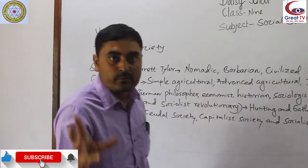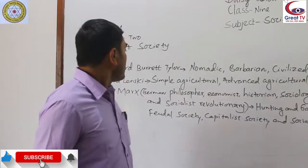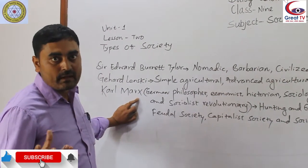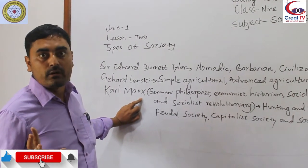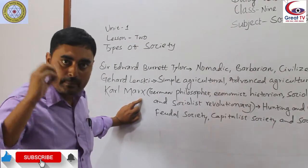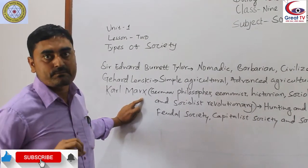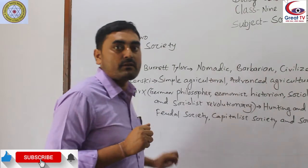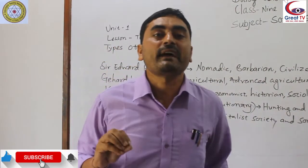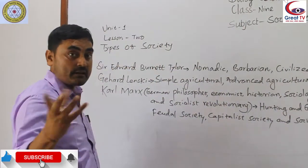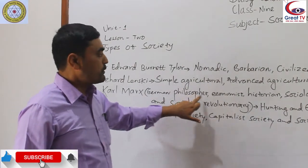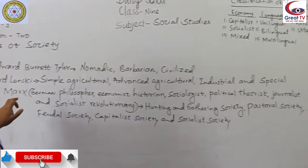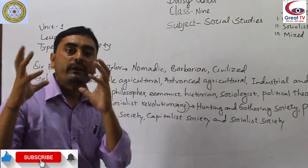Similarly, another great philosopher of the 19th century was Karl Marx. He has influenced the world with his philosophy — his political concept and economic concept. He was a multi-dimensional person with multiple identities. He was a philosopher, economist, historian, socialist, political theorist, journalist, and a socialist revolutionary.